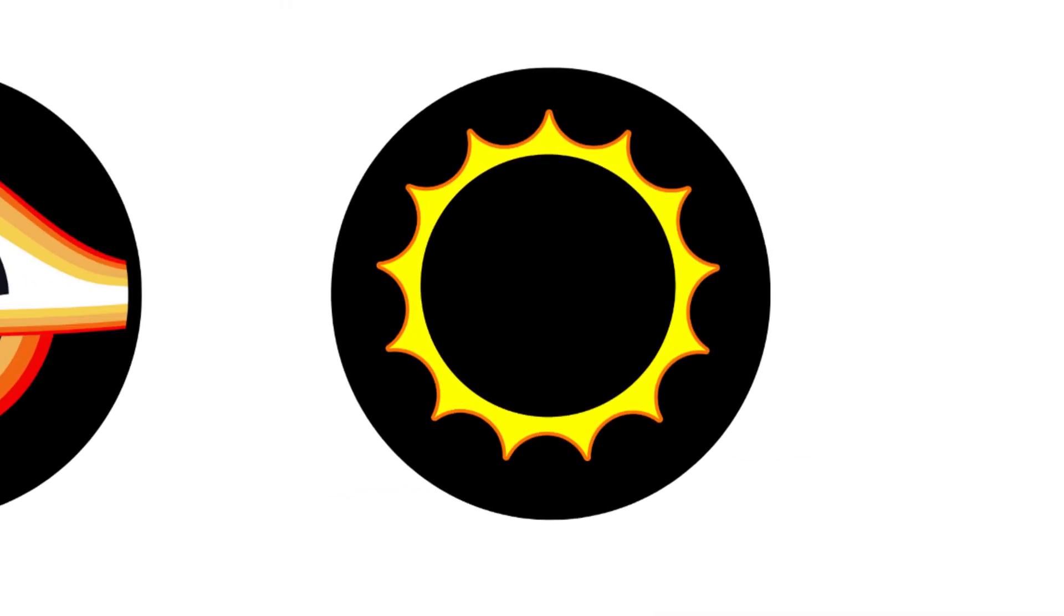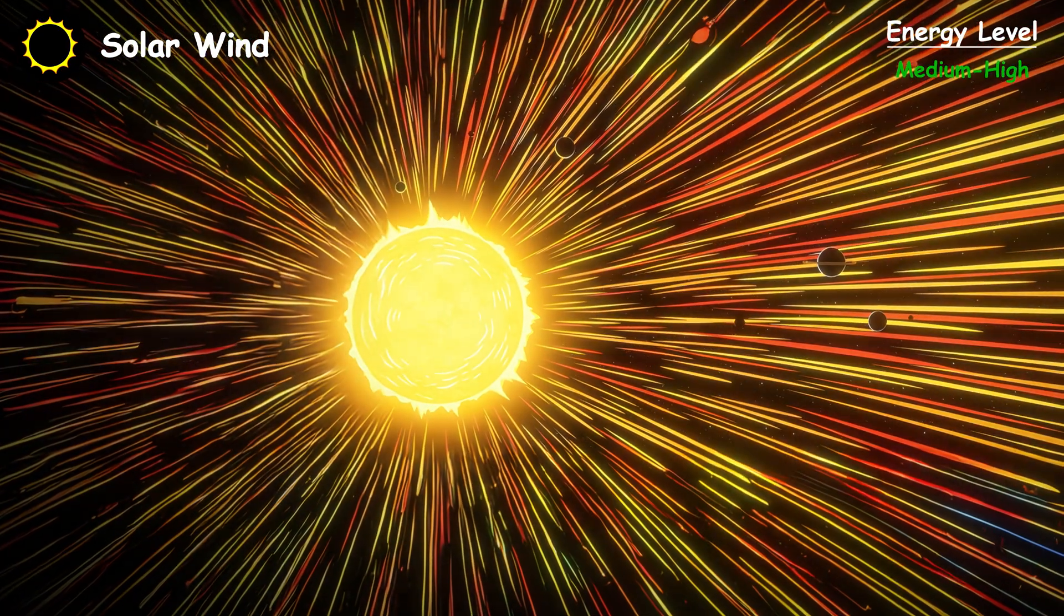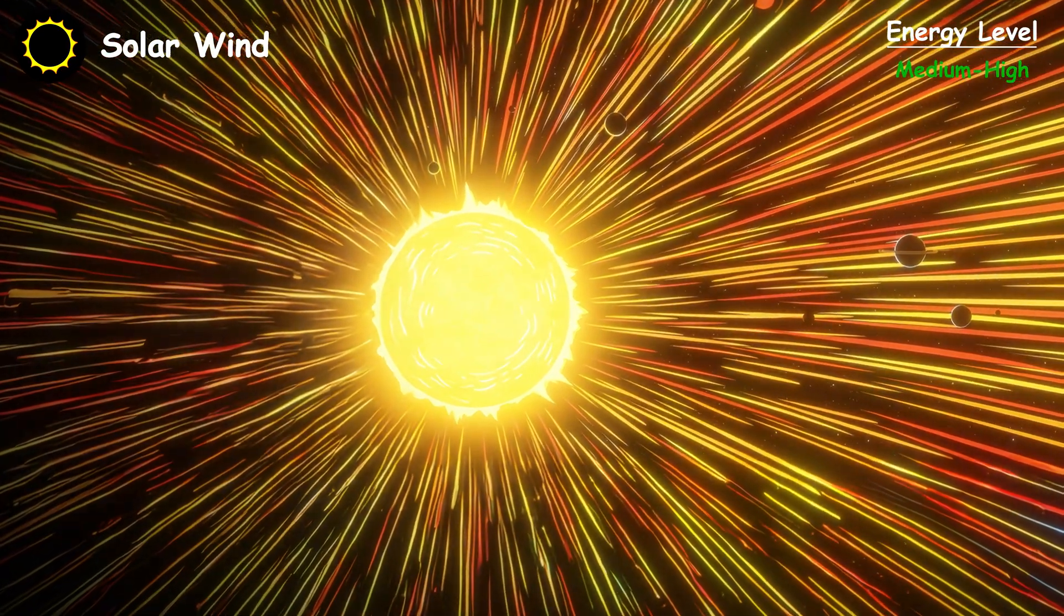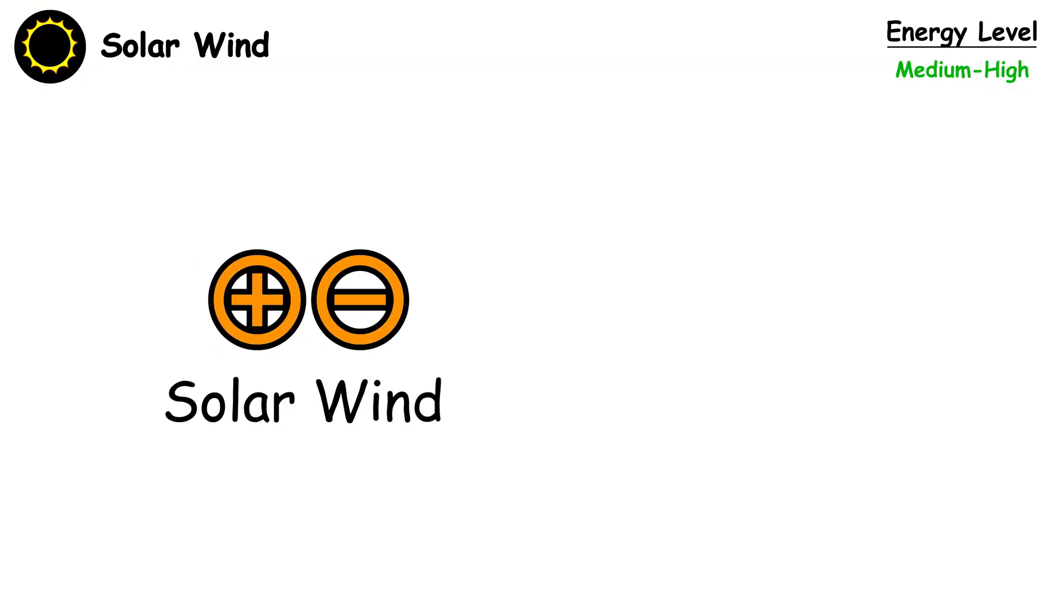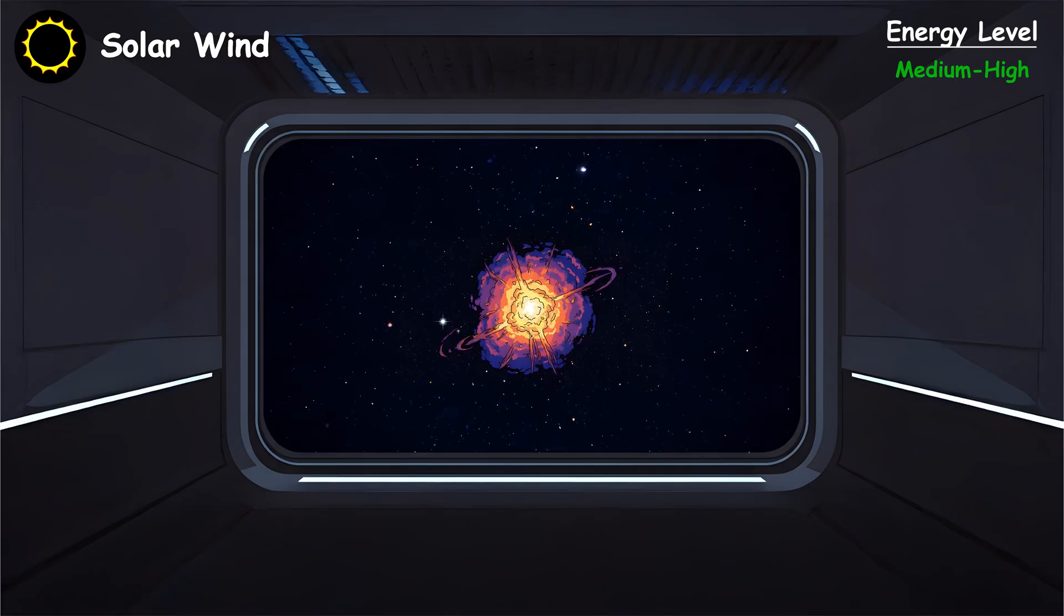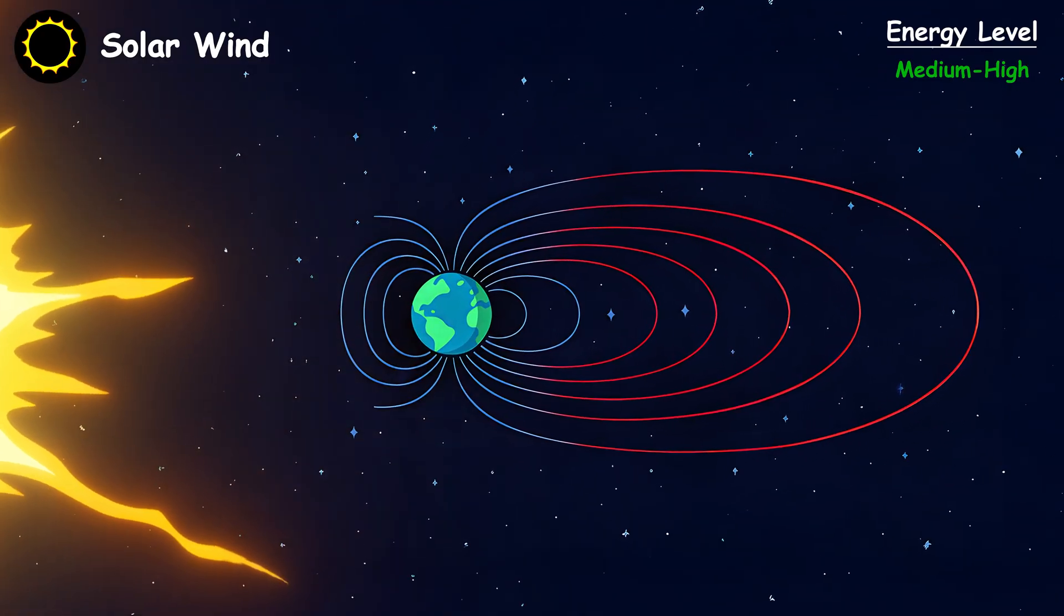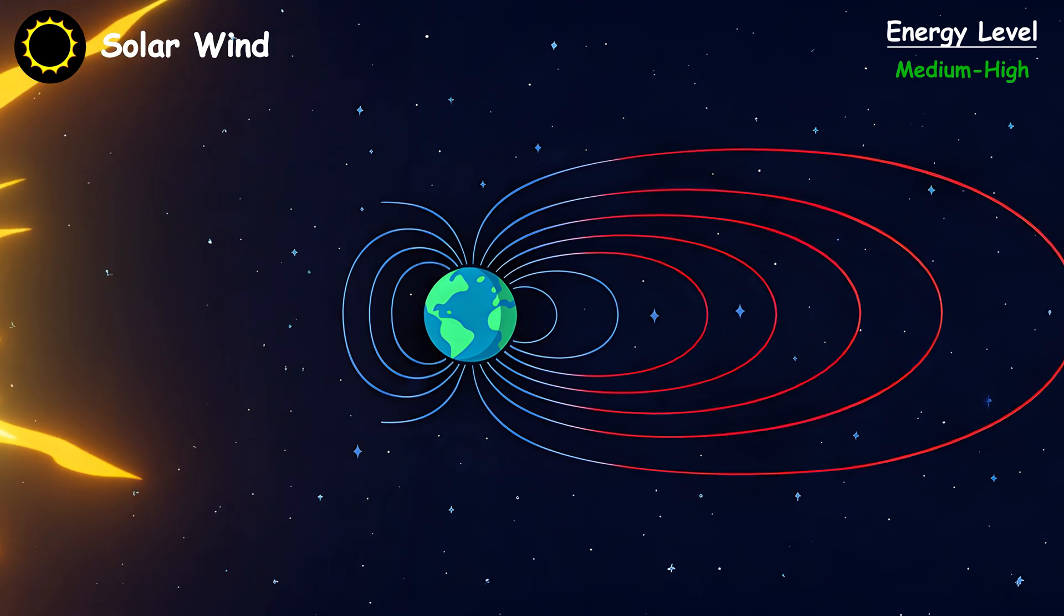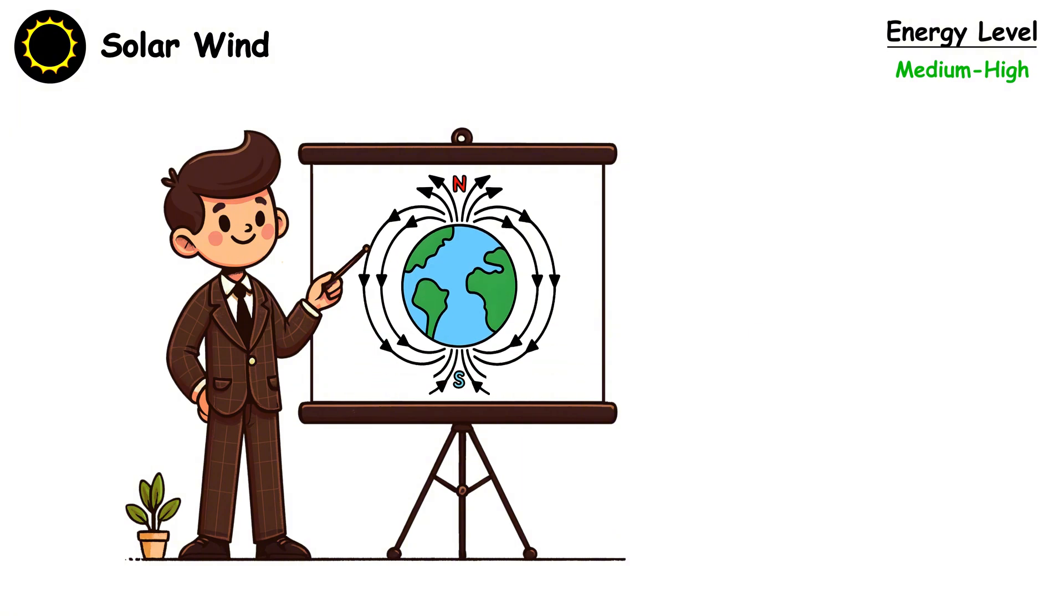Solar wind. Solar wind consists of charged particles, primarily electrons and protons, continuously streaming from the sun's corona at high speeds. Although it shares similarities with cosmic rays, cosmic rays are much higher-energy particles that originate from explosive events across the universe. Earth's magnetosphere deflects most solar wind particles around the planet, creating a protective bubble. Yet, some particles leak through at the magnetic poles, spiraling down magnetic field lines toward the surface.